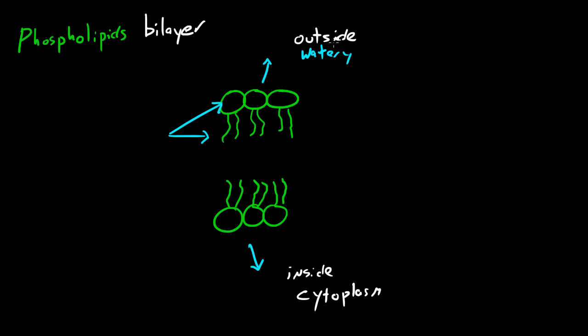So again, watery solution outside the cell and inside the cell. That's why the two layers of the phospholipids are pointing towards the watery side and the inside where the tails are, repelling the water. Simple enough.